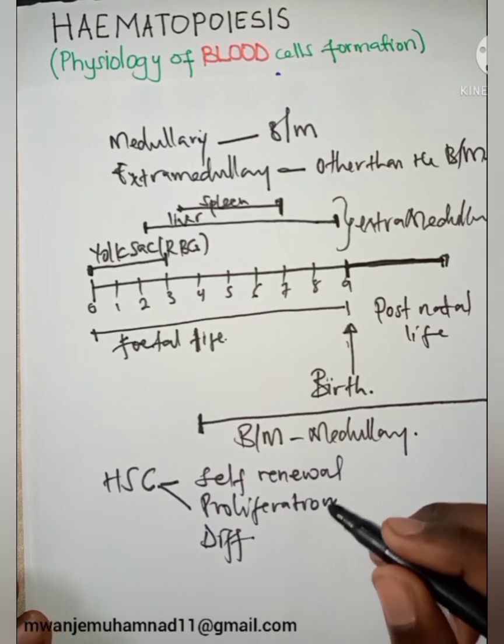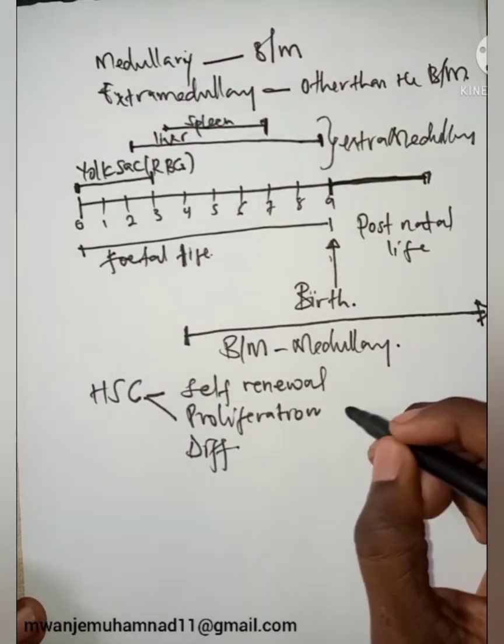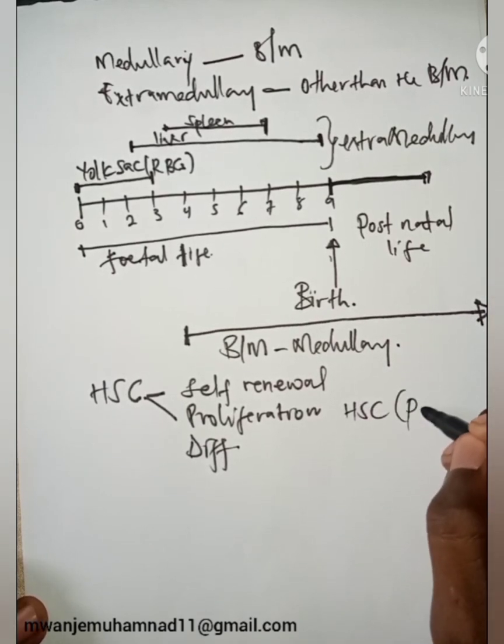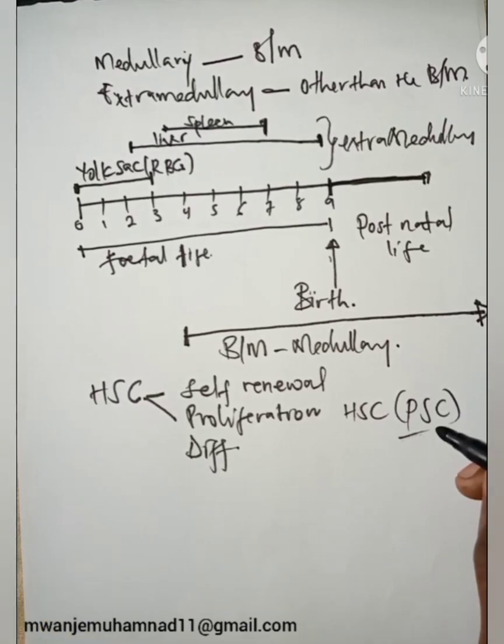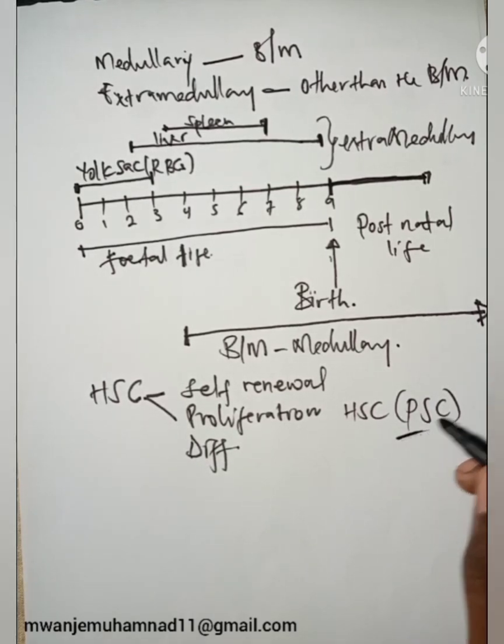By self-renewal, we mean before any cell is being formed, the hematopoietic stem cell, also called the pluripotent stem cell because it can differentiate into many blood cell types. It actually gives rise to every lineage: pluripotent or multipotent. That's why it's called so.